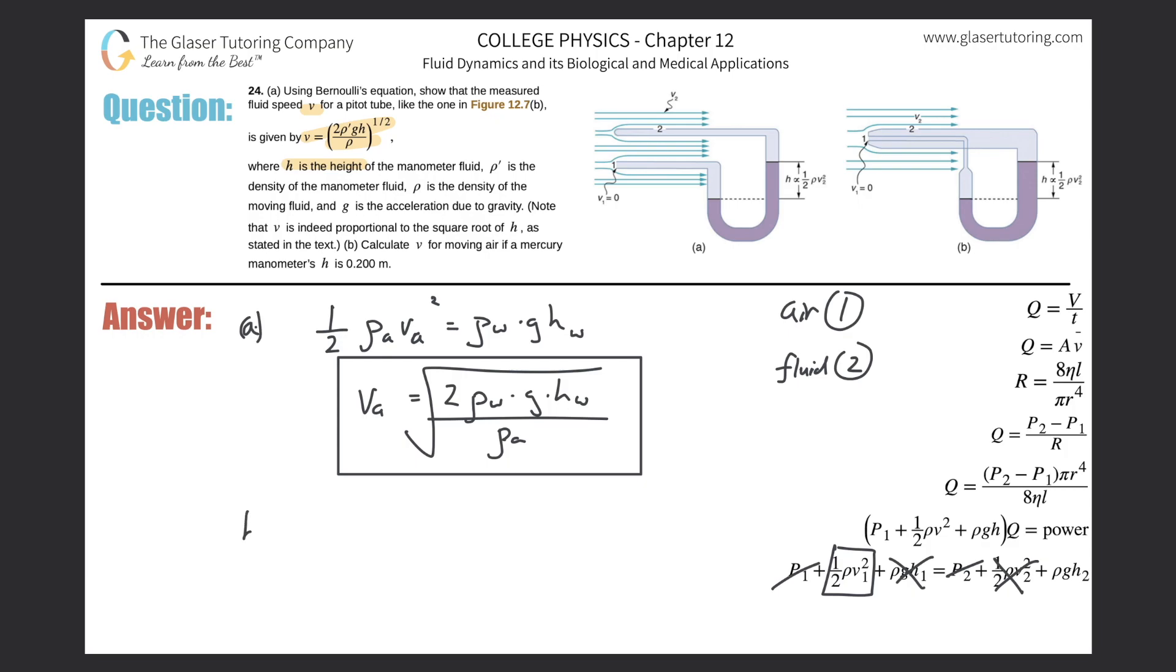Now, letter B, it says calculate the velocity of the moving air, so that's this, if a mercury manometer's height is 0.2 meters. So basically, volume of the air will be equal to square root times two multiplied by the density of, now they're using mercury. So I chose to, I called this water for some reason. I should have just left it as fluid. Let me just make that quick correction. Instead of W here, I'm just going to call it F.